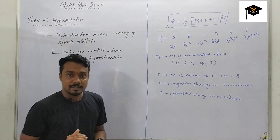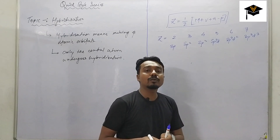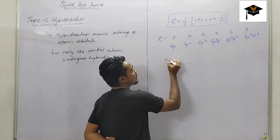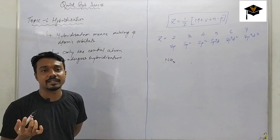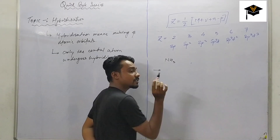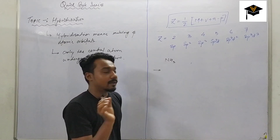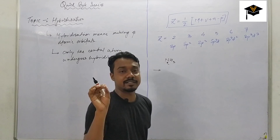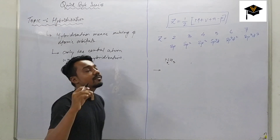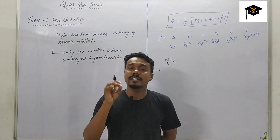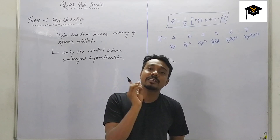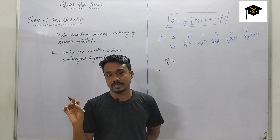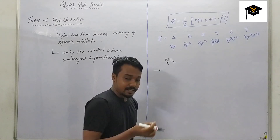Now let us see how to predict the central atom in a molecule. Take the example of NH3 — the first criterion is that the atom which is least in number is the central atom. Here nitrogen is least in number, so nitrogen is the central atom. If two atoms are in equal numbers, go for the least electronegative one. Also note: hydrogen can never be the central atom in any molecule.